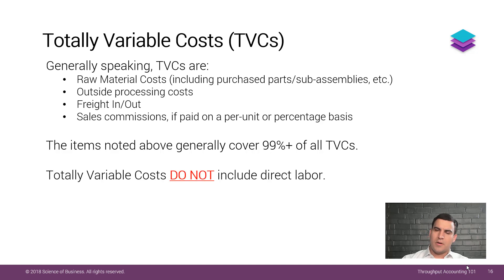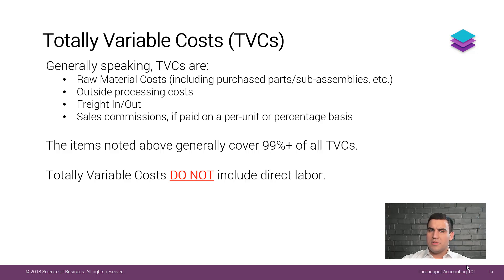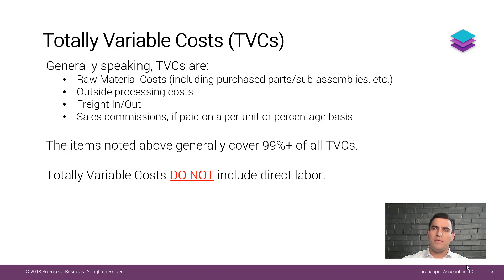I get it. Every other method of accounting that exists includes direct labor as a variable cost. How in the world can throughput accounting possibly be correct if we don't account for labor? How can we not call direct labor a variable cost? Well, we're not saying that labor doesn't vary because it does. Yes, it varies maybe three to five percent, maybe seven percent in the month when we really run a lot of overtime. As crazy as it sounds, that does not make labor a totally variable cost.